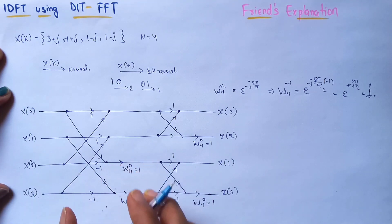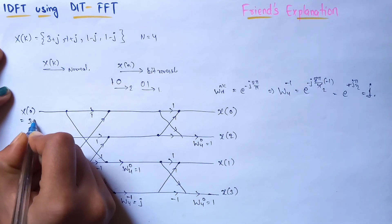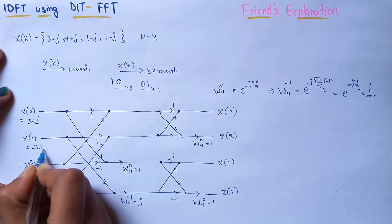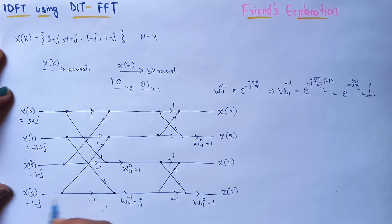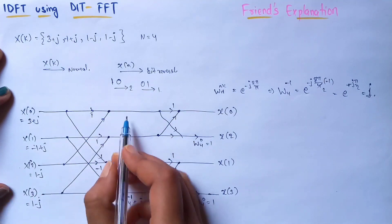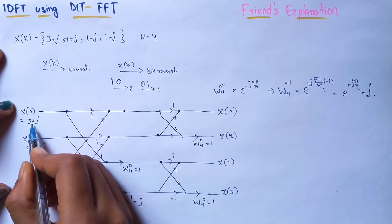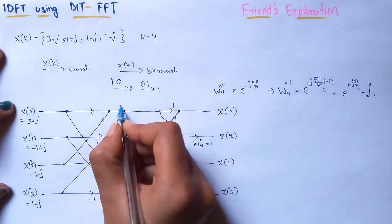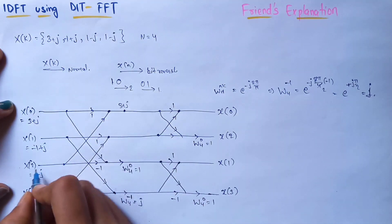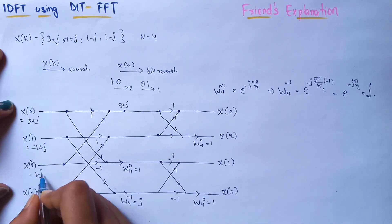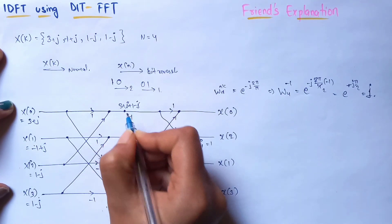Now let's put in the values and calculate the outputs. The inputs are: 3+j, -1+j, 1-j, and 1-j. For the first line, data flows as (3+j)·1 = 3+j, and from the other path (1-j)·1 = 1-j, giving 3+j + 1-j = 4. For the second line: (-1+j)·1 = -1+j, and (1-j) + (1-j) cancel, giving 0.